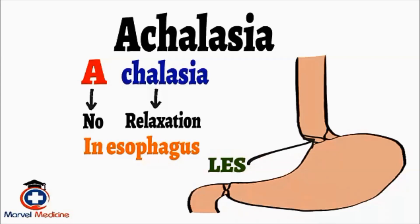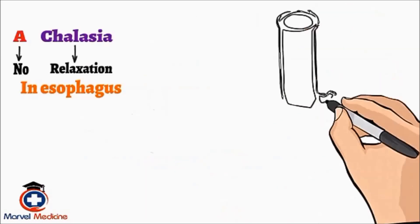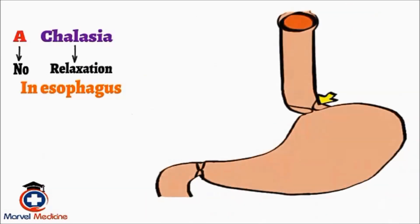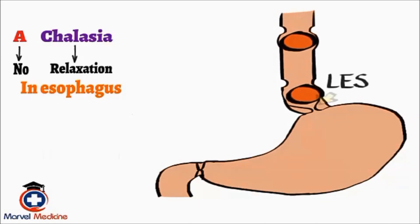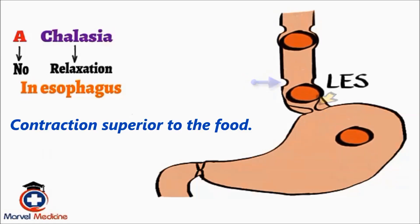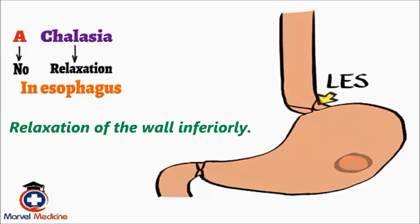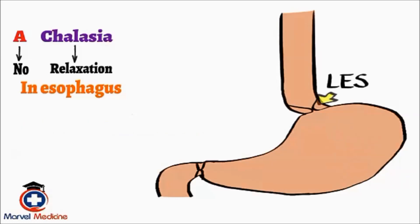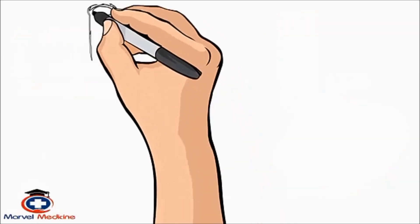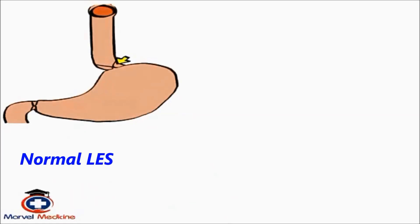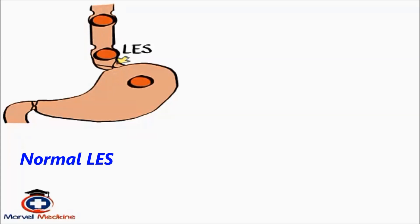This sphincter is normally closed. When we eat something, a wave of peristalsis is created to push the food downwards towards the stomach. This peristalsis consists of two opposing actions: contraction superior or cephalad to the food, and relaxation of the wall inferiorly or caudad, until the food reaches the lower esophageal sphincter. Normally, the lower esophageal sphincter relaxes to allow food passage into the stomach.